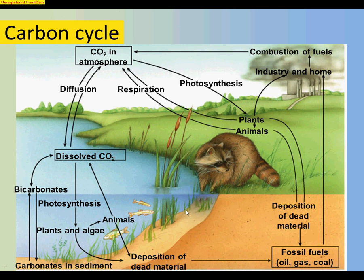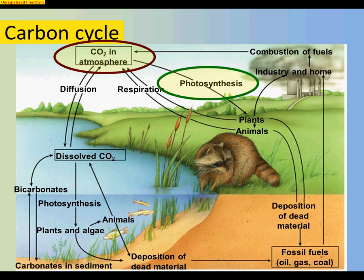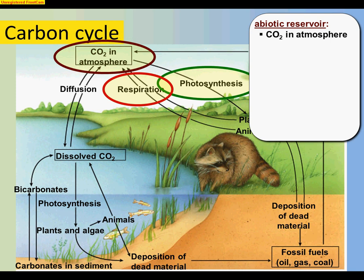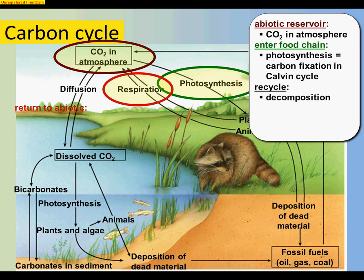Let's look at the carbon cycle. We're going to focus on carbon in the atmosphere — yes, carbon can be dissolved in the ocean too, but to simplify, focus on the atmosphere. Carbon enters the food chain through photosynthesis via plant life, and photosynthesis can happen in water as well. It gets recycled back mainly through respiration, and I'll also include combustion here because we'll talk about the human impact on the environment. Pause and copy down the four key things: abiotic reservoir, how it enters the food chain, how it gets recycled, and how it returns to the abiotic world.